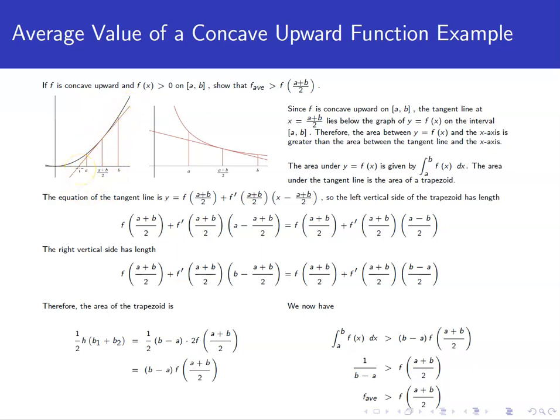So remember, for the equation of the tangent line, we would find the y-coordinate by plugging in (a+b)/2 into the function. We would find the slope of the tangent line by plugging (a+b)/2 into the derivative. And then using our point-slope form, we can figure out the equation of the tangent line as y-coordinate plus slope times (x minus x-coordinate).